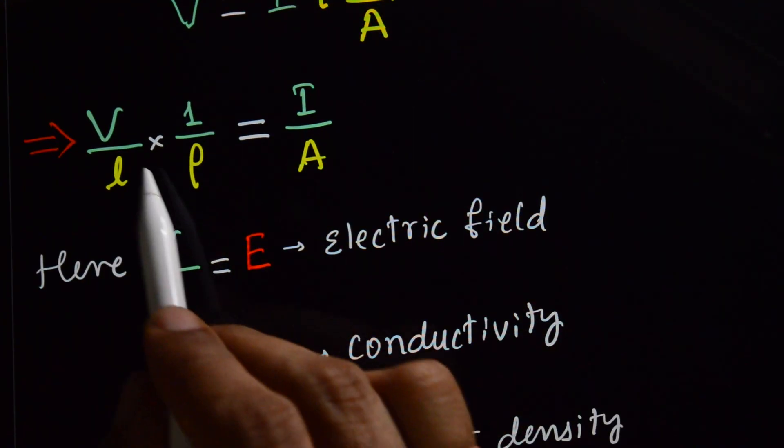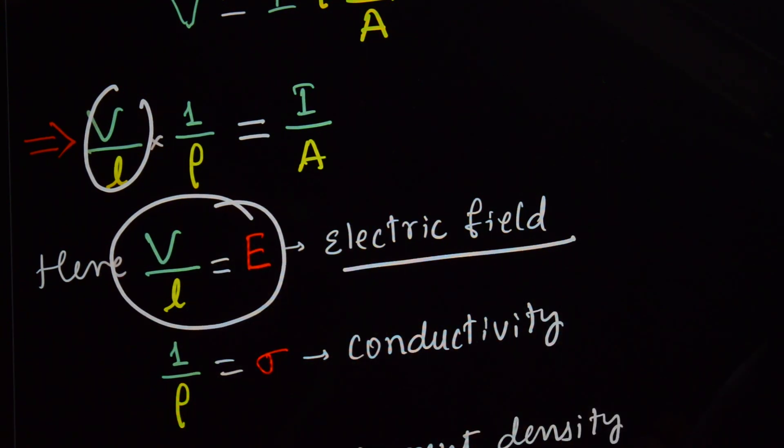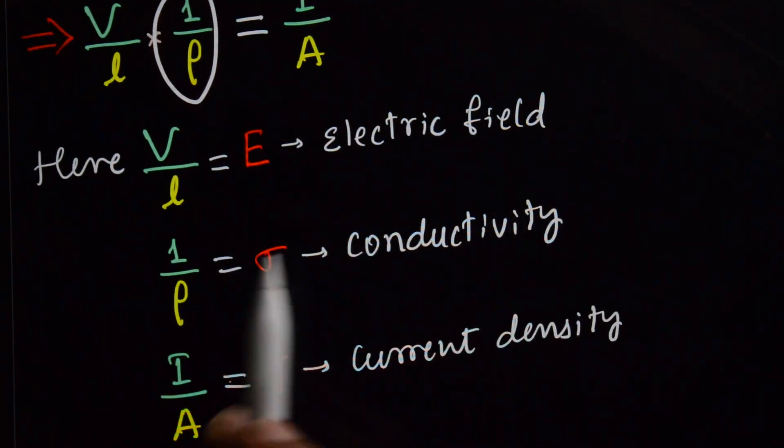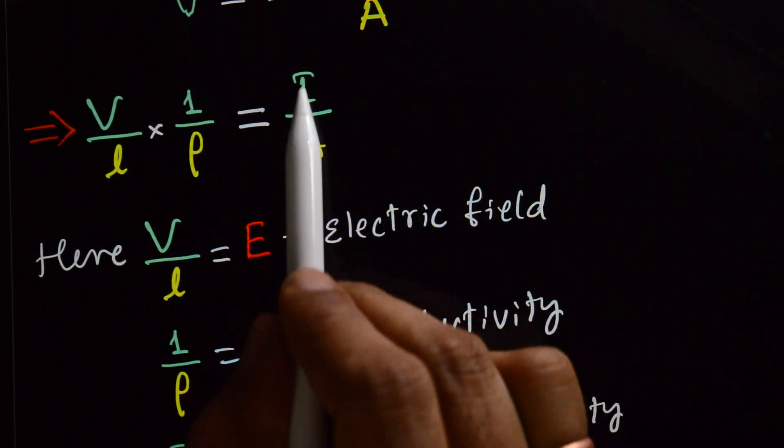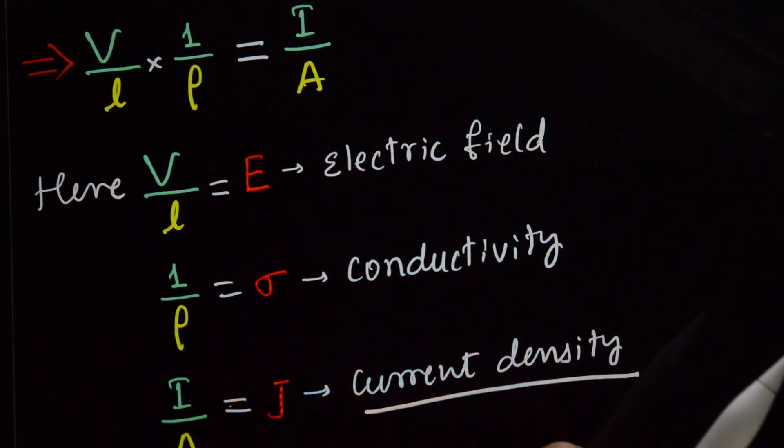Here we know that, what is V by L? V by L is electric field. 1 by rho is conductivity. I by A, that is, current density.